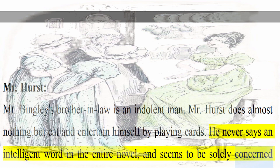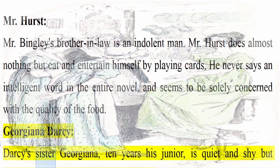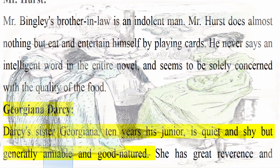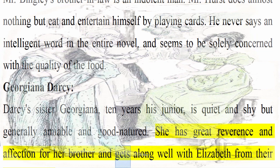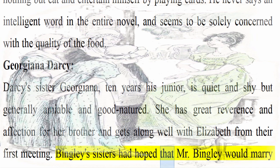Georgiana Darcy: Darcy's sister Georgiana, ten years his junior, is quiet and shy but generally amiable and good-natured. She has great reverence and affection for her brother and gets along well with Elizabeth from their first meeting. Bingley's sisters had hoped that Mr. Bingley would marry Georgiana, thus uniting the fortunes of the two families.